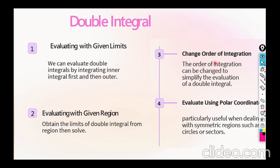That is the use of the change of order of integration. Type 4 involves evaluating the double integral in polar coordinates, which is particularly useful when the region of integration is symmetric about the origin — for example, a circle, ellipse, or part of a circle or ellipse. Converting to polar coordinates makes the integral and calculations very simple. In the next session we will learn examples on the double integral.